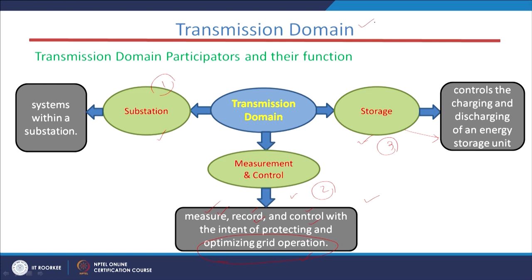This storage helps in charging and discharging of the energy storage unit. In the transmission system we are transferring energy, and storage units are installed to store energy for later use. For example, if we are penetrating renewable sources like solar or wind at large scale — say more than 2 megawatt, 6 megawatt, or 10 megawatt — and our consumption is less, we store the excess energy using this storage facility.